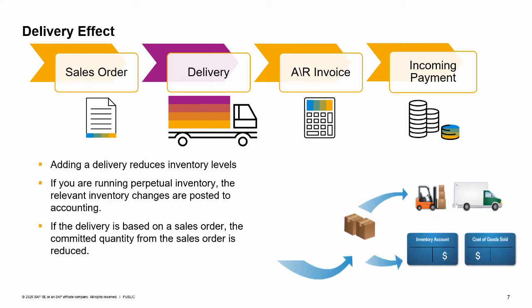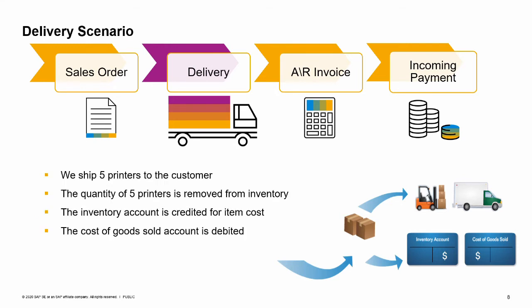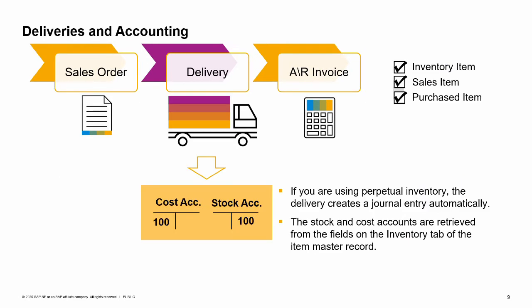Adding a delivery reduces the actual inventory levels. When you post a delivery, the corresponding goods issue is also posted. The goods leave the warehouse, inventory quantities are reduced, and if you are running perpetual inventory, the relevant inventory changes are posted to accounting. If the delivery is based on a sales order, the committed quantity from that sales order will also be reduced. In our business example, we ship five printers to the customer. The quantity of five printers is removed from inventory, the inventory account is credited for item cost, and the cost of goods sold account is debited. The system creates a journal entry automatically, posting the value of the current item cost to the debit side of a cost account such as cost of goods sold, and to the credit side of the stock account. The stock account and cost account are retrieved from the inventory tab of the item master record. The stock quantity is affected whether or not you are using perpetual inventory.